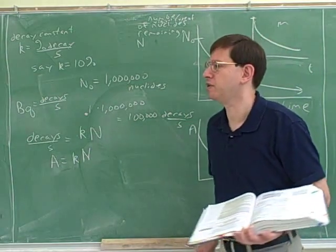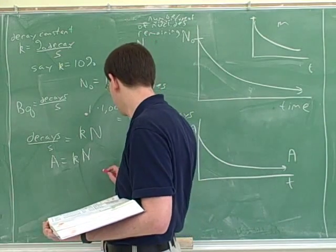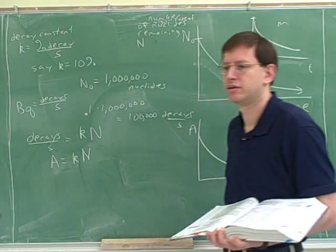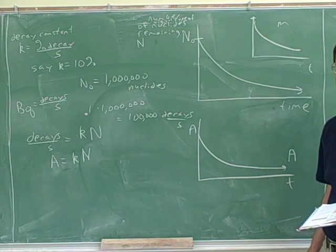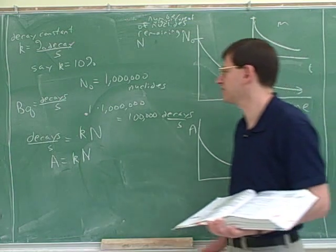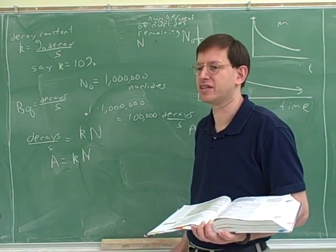If something is very radioactive, would that mean it has a big K or a small K when you're ready? The decay constant, you mean? Yeah. I would say it's big. Yeah, because this tells us what percent is decaying per second. If something is very radioactive, a lot of it decays each second.